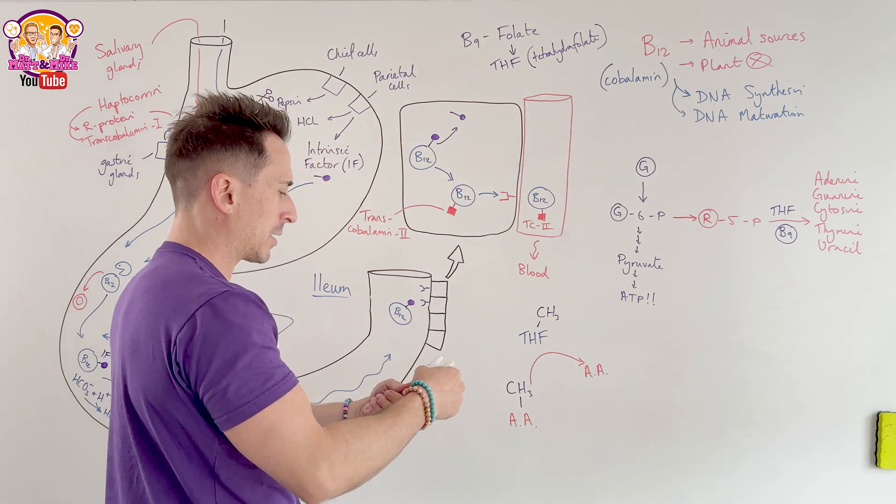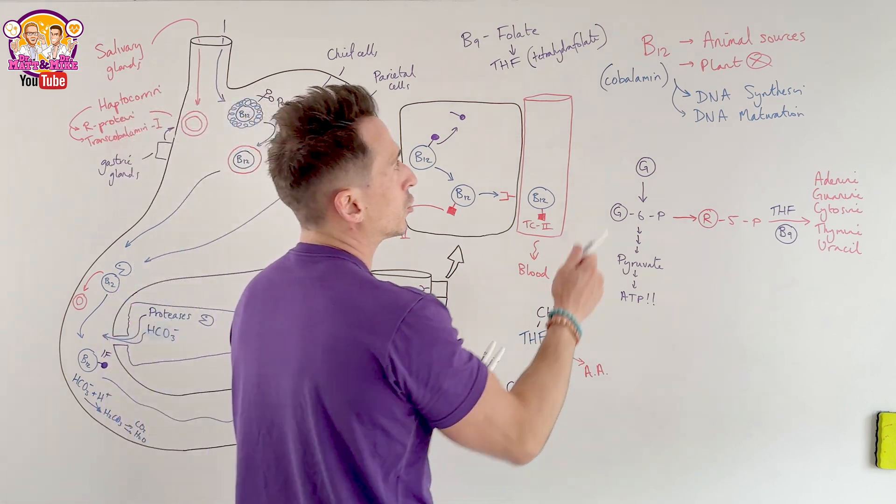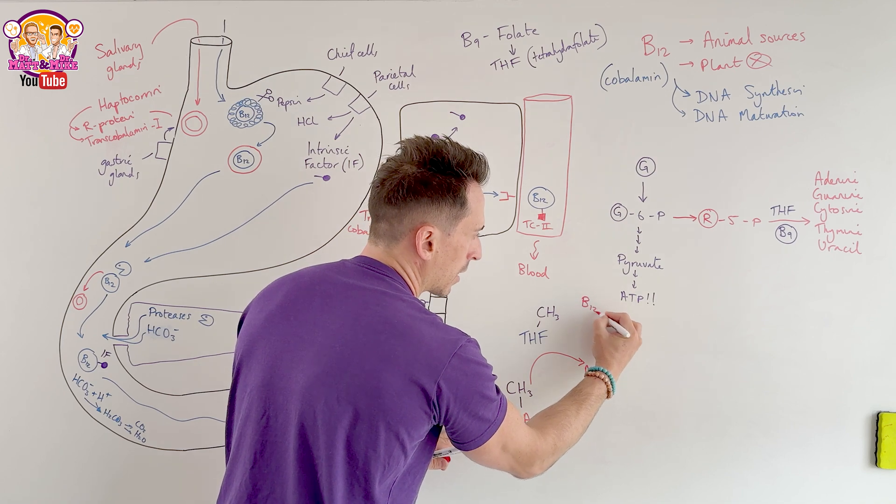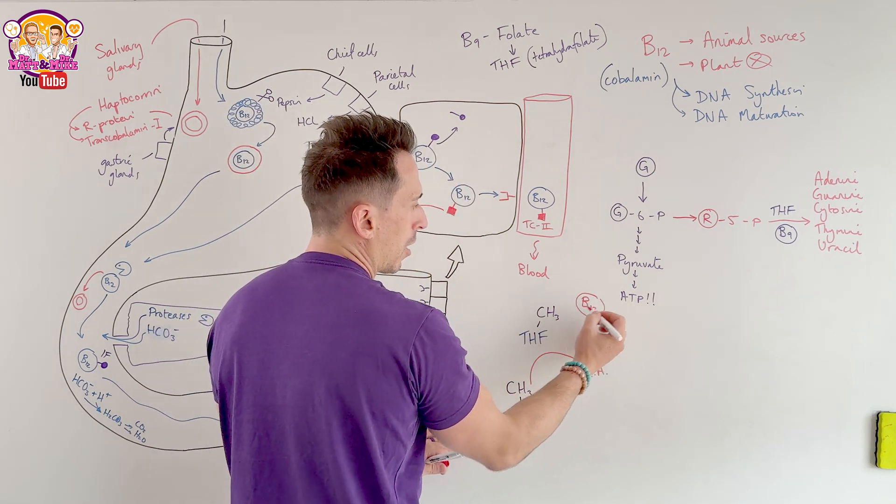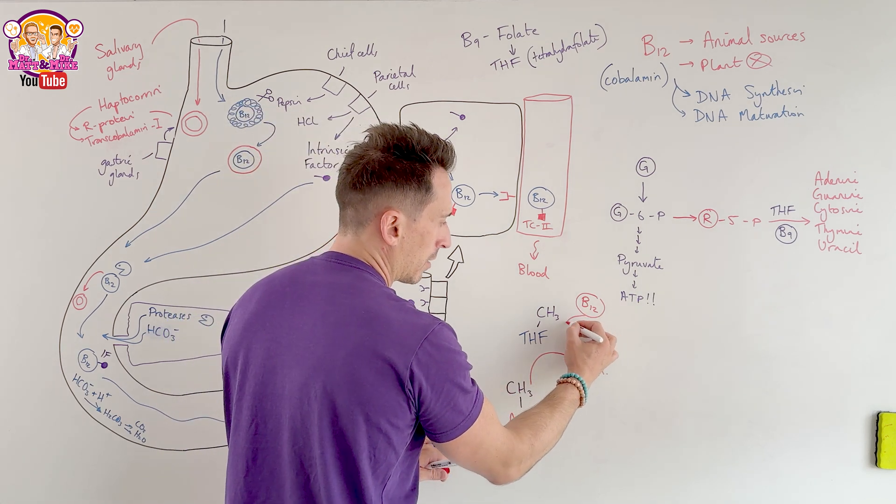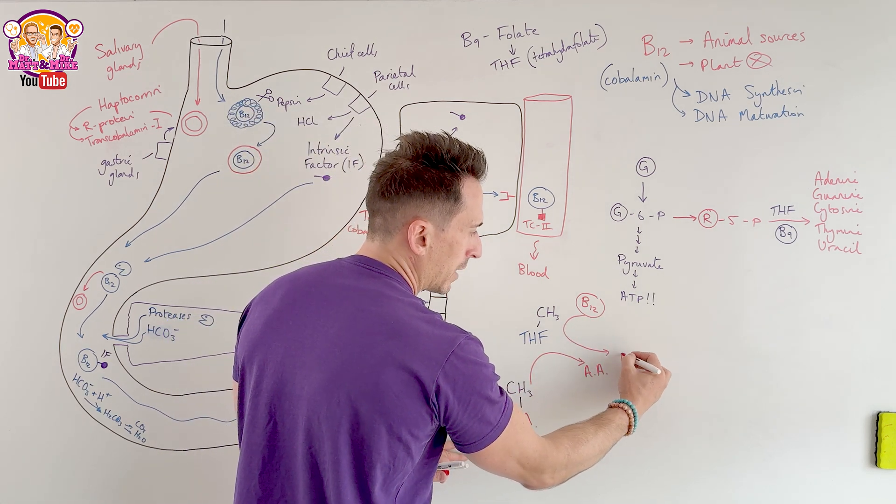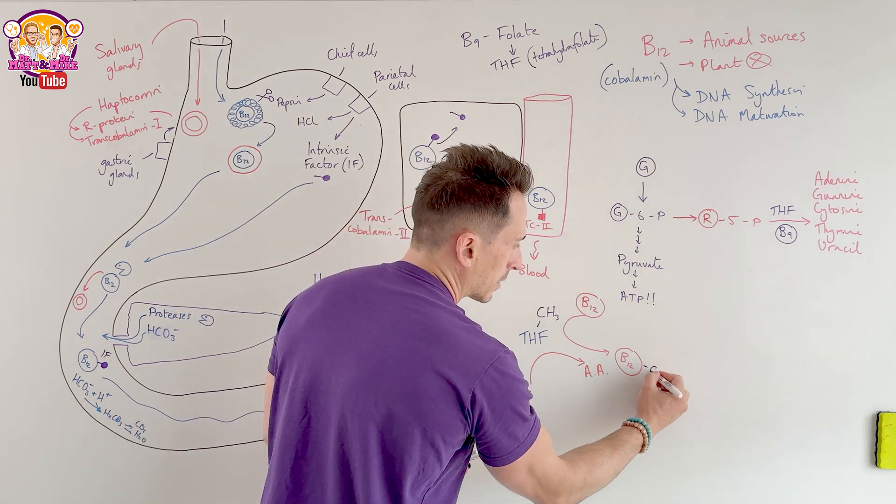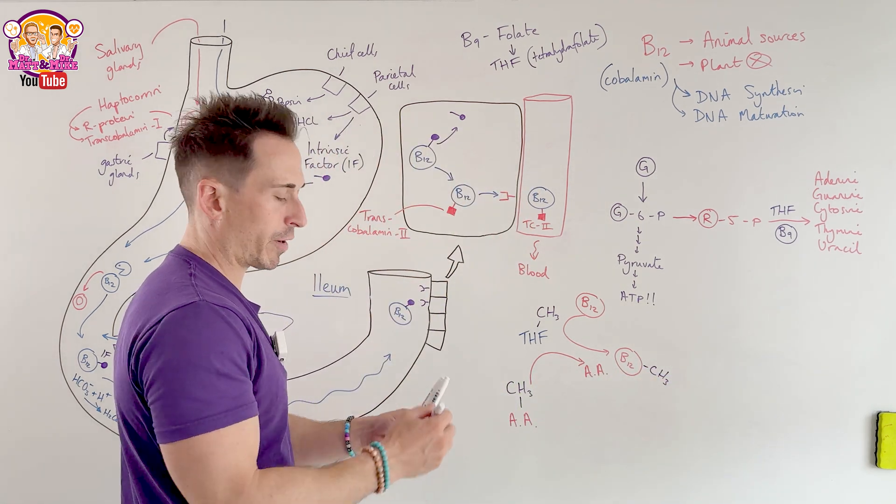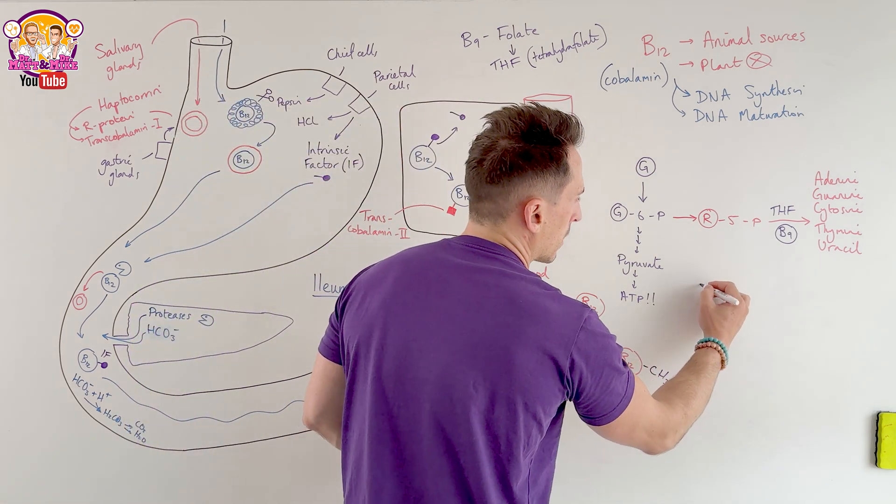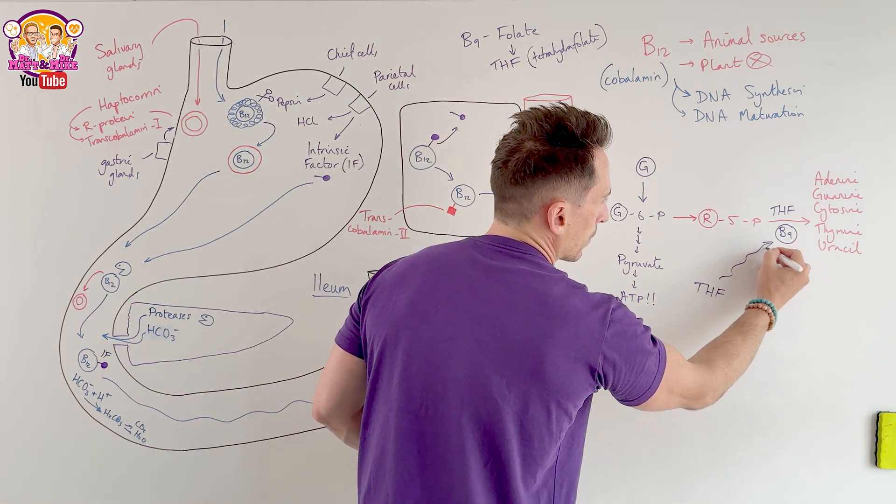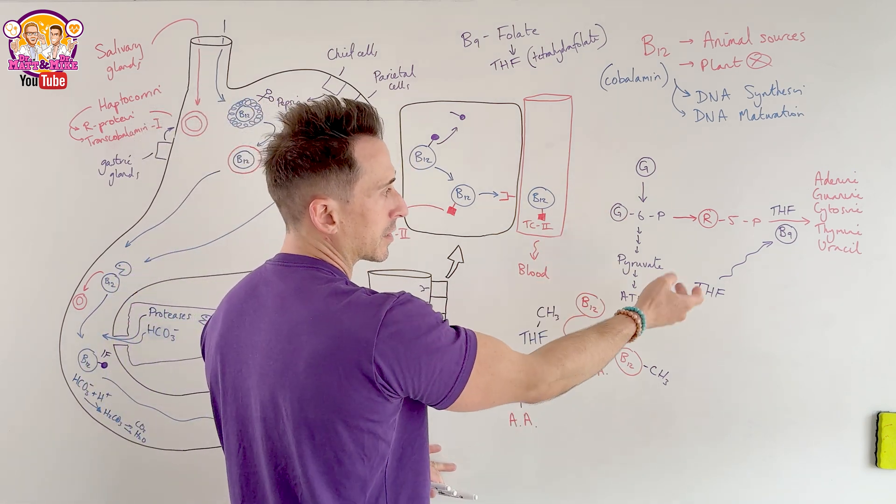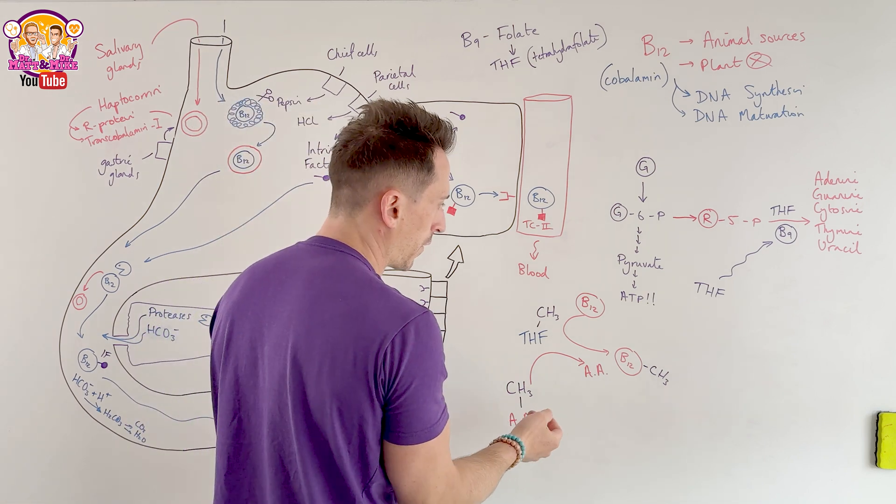However, luckily for us, we've got B12. And what B12 will do is B12 comes along and says, Oh, my friend, what is the problem? Oh, you've got that methyl group. Don't worry, man. I'll take it from you. And B12 takes the methyl group from it. And it says, go forward and prosper, my friend. And now THF can thankfully undergo DNA synthesis. So B12, through this process, allows for DNA synthesis to occur with THF, tetrahydrofolate.